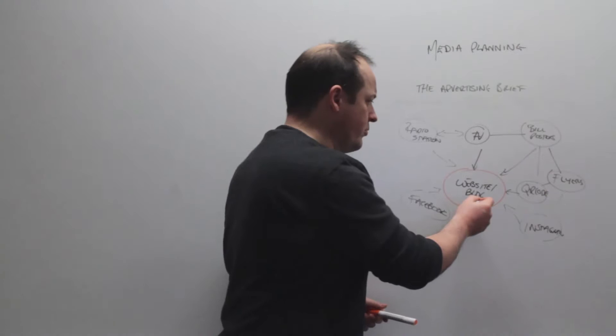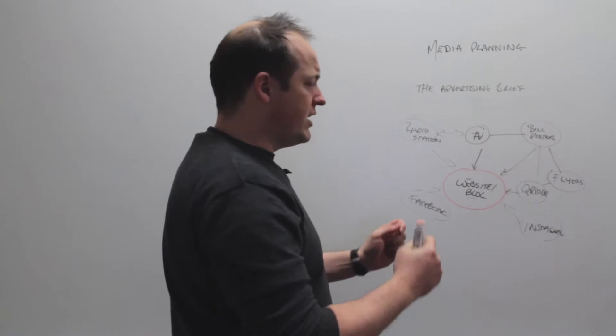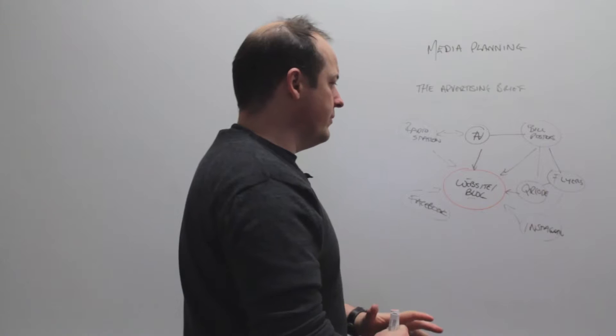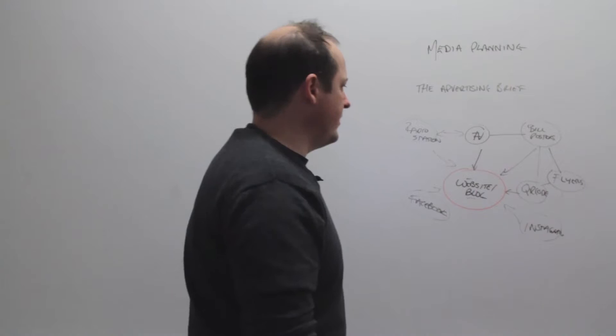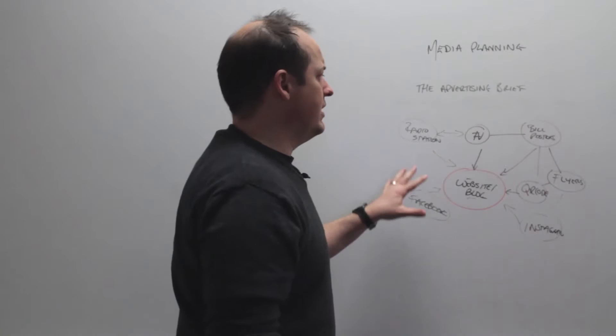Ultimately, this is where we want customers to end up. These are all different media channels or vehicles we can use to drive people back to the middle. It's not just one or two things — they interlink, and there can be a whole bunch of them. For social media, are we going to have Instagram, Facebook, and LinkedIn, or is LinkedIn not appropriate? We need a consistent style and a consistent message across all of them.